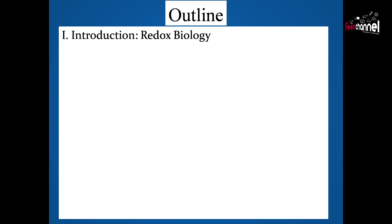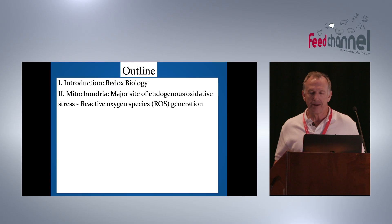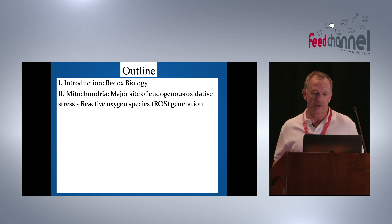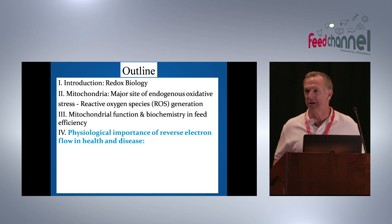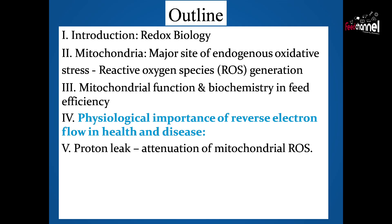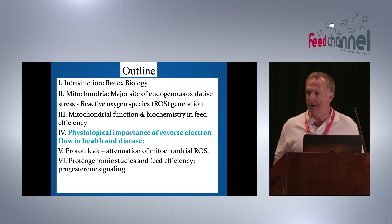This is the outline of my talk. I'm going to introduce Redox Biology and hopefully begin to introduce what the other speakers are talking about. I'll discuss mitochondria as the major source of endogenous oxidative stress in cells, talk about mitochondrial function and biochemistry associated with feed efficiency, and cover reverse electron flow — which is relatively new in mitochondrial biology. I'll also cover proton leak, progesterone's possible involvement in feed efficiency, and if time allows, a mitochondrial surprise.